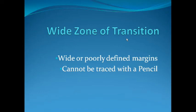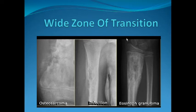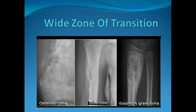A wide zone of transition means poorly defined margins which cannot be traced with a pencil, as seen in an X-ray of the lower end of the femur with a permeative type of bone destruction where we cannot determine where the tumour ends and the normal tissue begins. In the case of an infection, we similarly don't know where the infection ends and the normal bone begins — a wide zone of transition in a skeletally immature individual at the lower end of the radius.